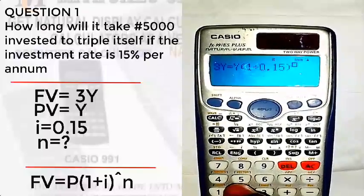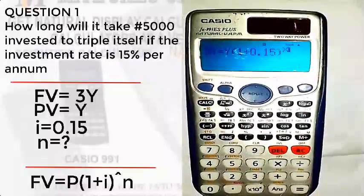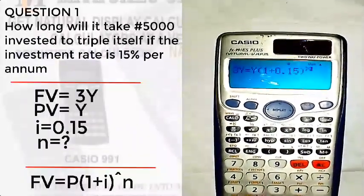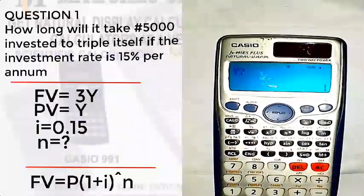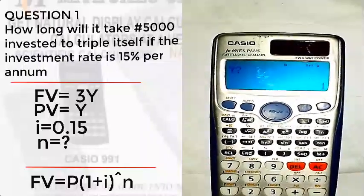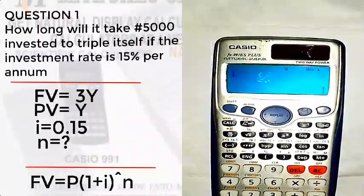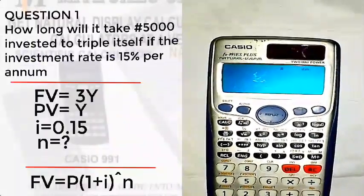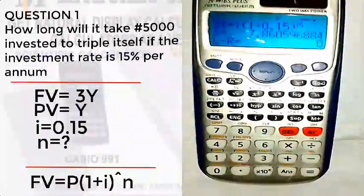Raise the power to the number of years. So we don't know, we represent that one with x. It's very important you represent the value you're going to find with x. Then the next thing is to click on shift solve. Now let's input any value for Y. You can use any value for Y, but I will use one. Then equal to.